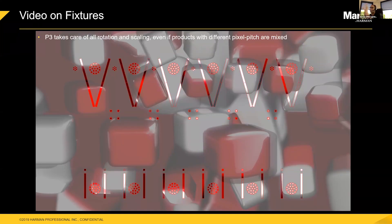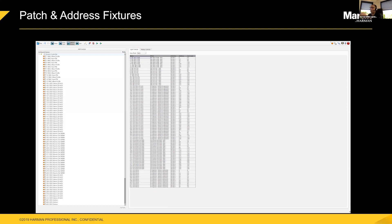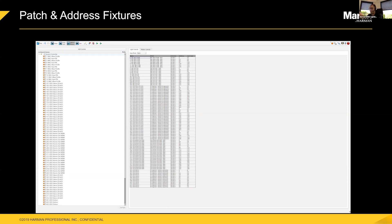Once you've mapped video to the fixtures, that's phase one done. The second step is patch and address them. On the P3, you also get ArtNet or streaming ACN from the console, and you patch and address all your fixtures in the desired mode to the desired universe. Very importantly, once you've patched and addressed the fixtures on the P3, you do not need to do any more addressing on the actual fixtures themselves. The P3 controller pushes all of that down to the fixtures centrally. So the three basic steps are: map the fixtures, get video onto them, and patch and address them.